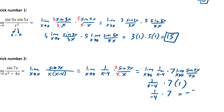That gives us negative 7 fourths, and decimal-wise — and this is exact, not approximate — that's negative 1.75.